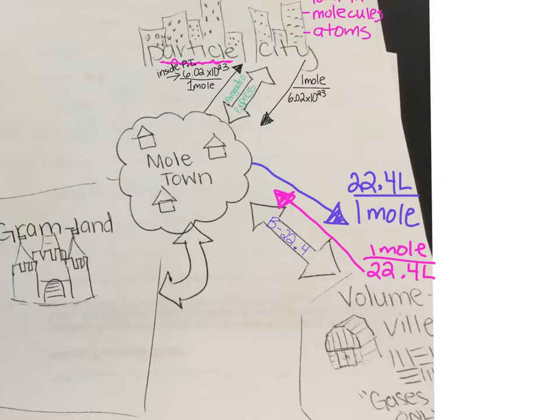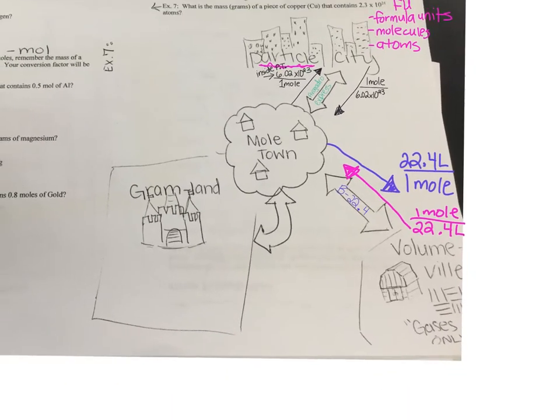So if you notice, wherever you're traveling to, that goes on top. Do you see that on both examples so far? Wherever you're traveling to, wherever that arrow is pointing to, that is who goes on top. The other number goes on the bottom. What number is stuck with mole, by the way? One. We're always defining one mole, right, with something else that is equal to that one mole. So just a couple hints to kind of help you when we start getting into the calculations.